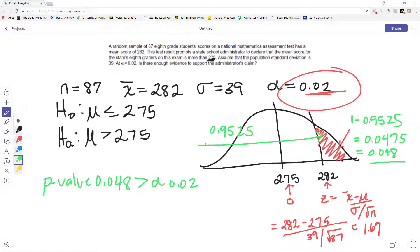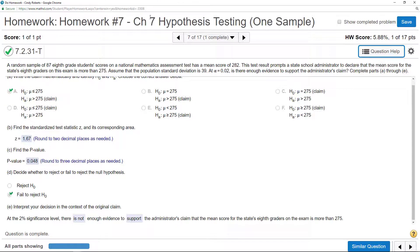So let me show you the actual problem here real quick. So, here is the actual problem. You can see setting up the hypothesis, my z-value, my p-value. We fail to reject.